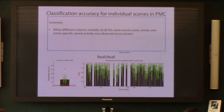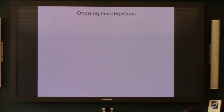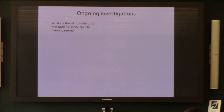So I've shown you that when different subjects are verbally recalling the same movie scene, you see similar and scene-specific neural activity in direct correlations between brains, throughout the default mode network but not in lower-level sensory areas.